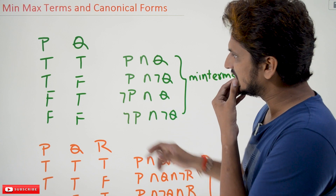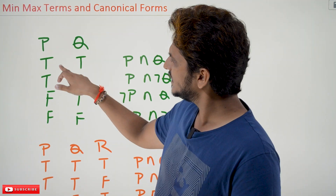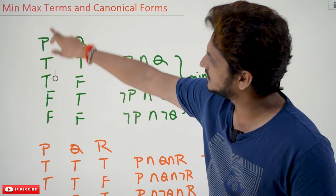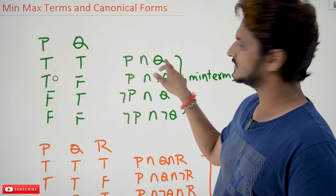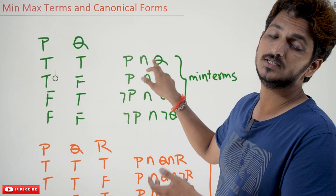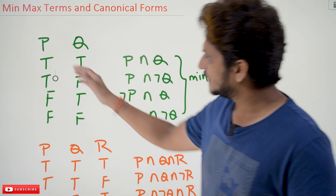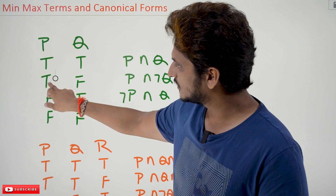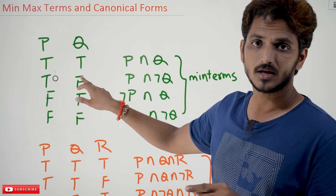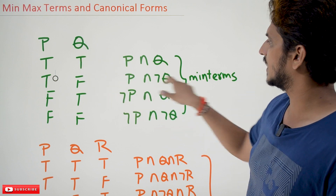So from this we can write the Min Terms. How we are going to write the Min Terms? See here, if you are having true, write it as P because this is in the line of P. If you are having true, write it as Q. In Min Terms we use conjunction: P conjunction Q. This is one Min Term. Next, if you are having true, write it as P conjunction. If you are having false, write it as negation Q. This is another Min Term.